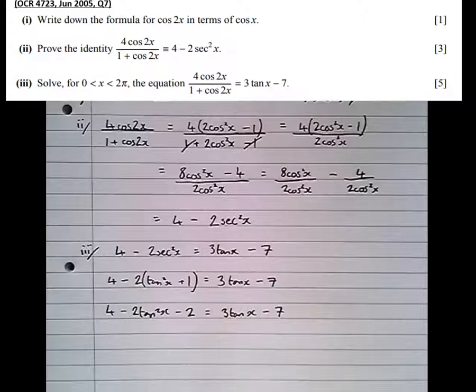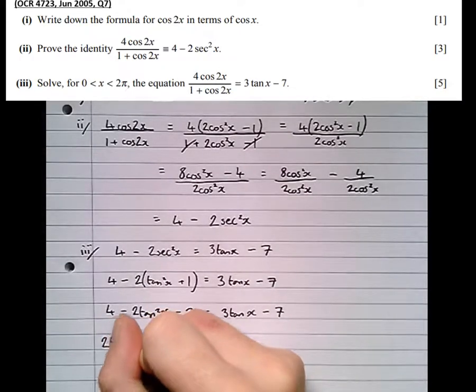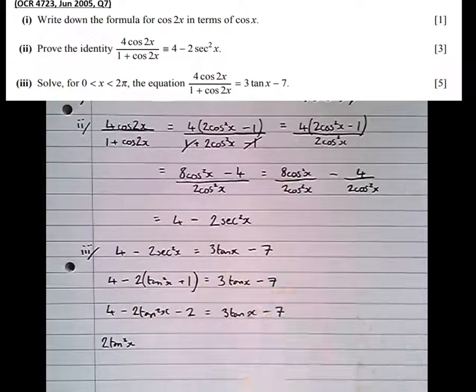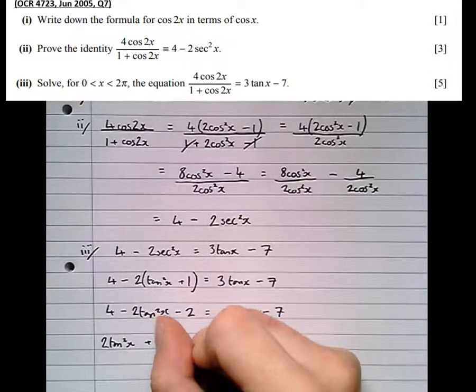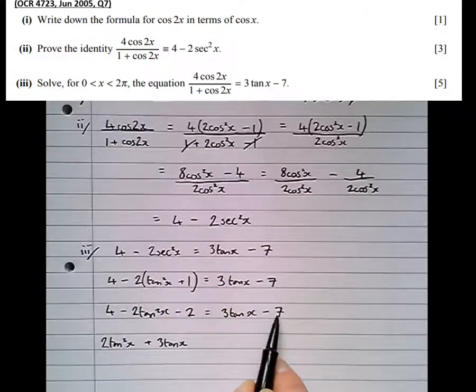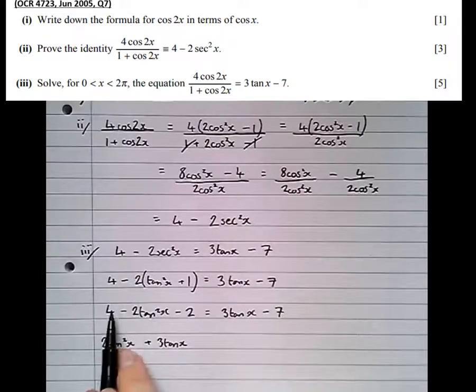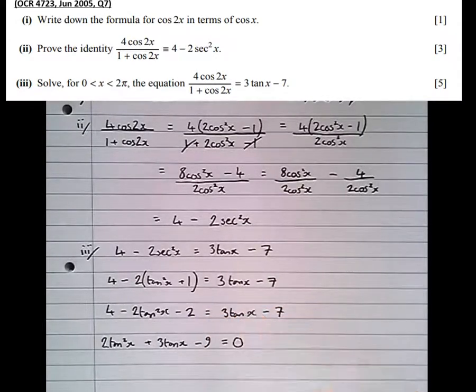So I'm going to be rearranging that a bit more. Take everything over to the other side. So we've got 2 tan squared x. Taking that over to there. Plus 3 tan x. Then I'm going to add 2 to bring that up to minus 5. Then take 4 to bring it to minus 9. Equals 0.